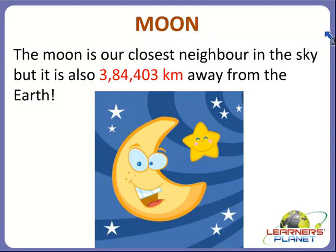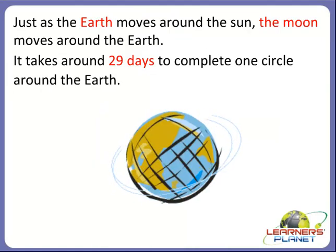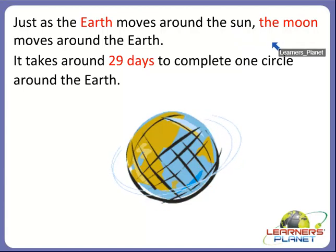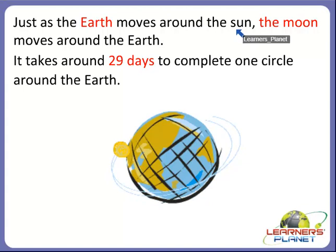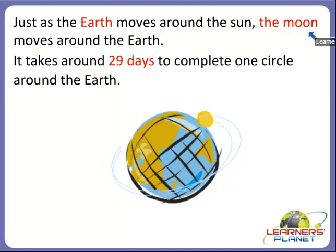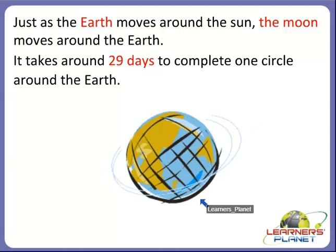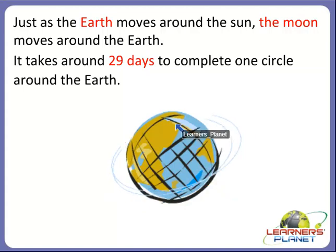Just as the earth moves around the sun, the moon also moves around the earth. We studied in the previous session that the earth moves around the sun in a fixed path called orbit. The same way, the moon also moves around the earth. You can see here in the picture — this is the moon moving around the earth.